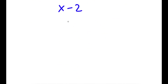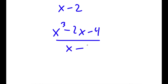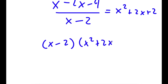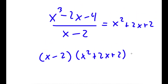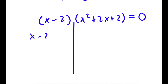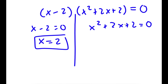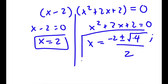So if I divide x³ minus 2x minus 4 by x minus 2, I get x squared plus 2x plus 2. So this factors as x minus 2 times x squared plus 2x plus 2 equals 0. This gives two equations: x minus 2 equals 0, so x equals 2; and x squared plus 2x plus 2 equals 0, which using the quadratic formula gives x equals negative 2 plus or minus the square root of negative 4 over 2, yielding complex roots.